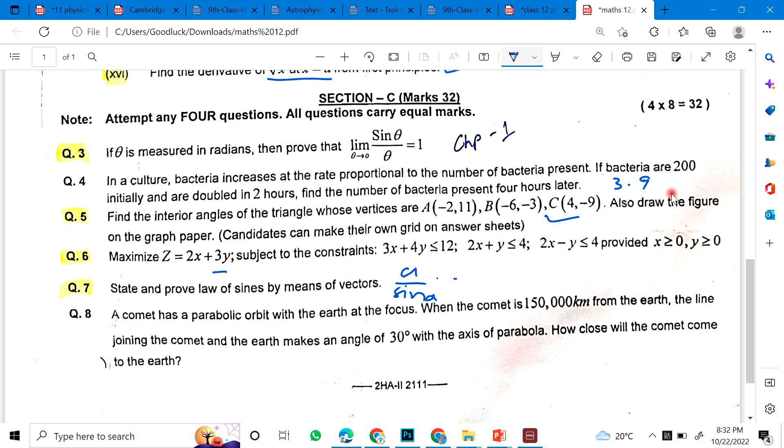A comet has a parabolic orbit with the earth at the focus. When the comet is this kilometer from the earth, the line joining the comet and the earth makes an angle of 30 degrees with the axis of parabola. How close will the comet come to the earth? This one has a guest paper, which happened after this. It was a real question.